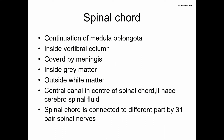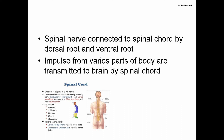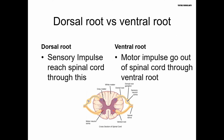The spinal cord runs through the vertebral column. It is protected by the vertebrae and bathed in cerebrospinal fluid. The spinal cord has 32 spinal nerves. It has a dorsal root and a ventral root — the dorsal root carries sensory impulses into the spinal cord.